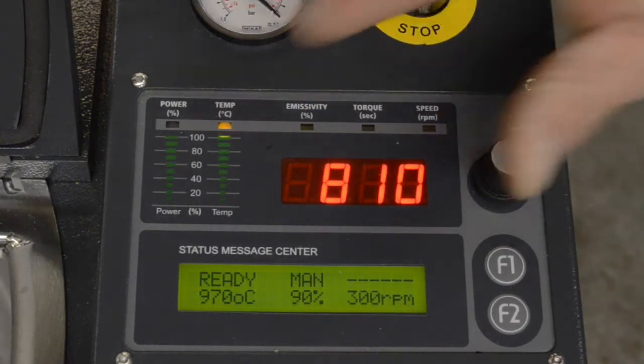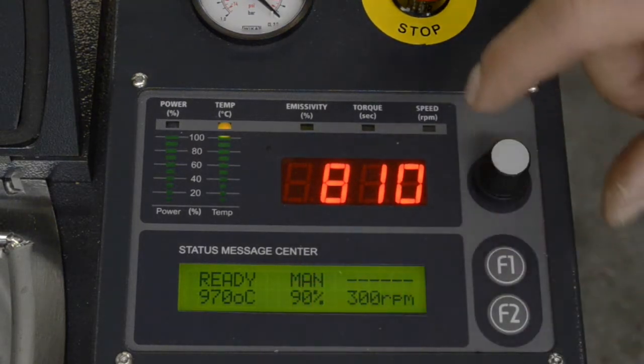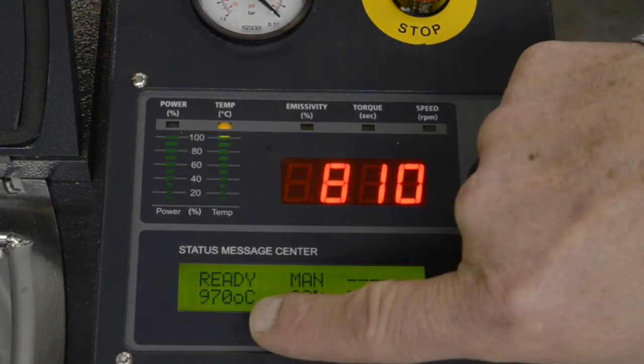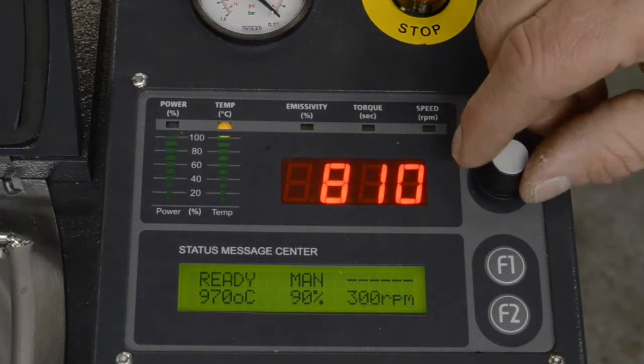Next is the temperature setting. Right here it tells you what the actual temperature is set for. This is the actual setting, set temperature. This is the actual temperature that the optical pyrometer is reading from the metal.